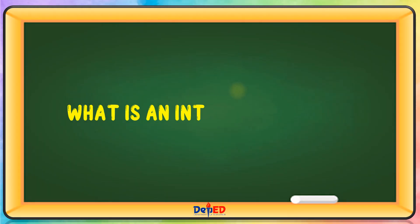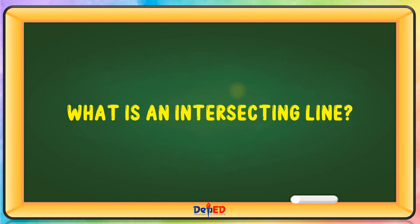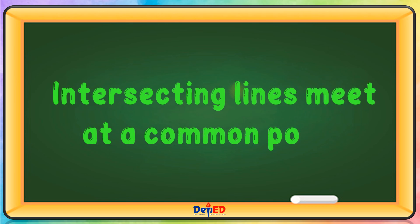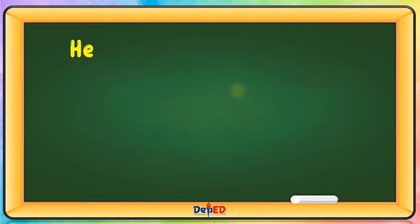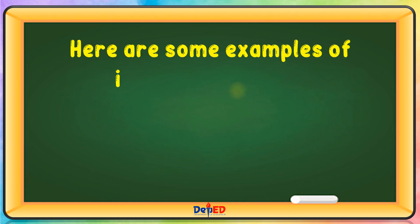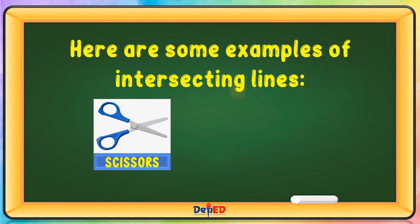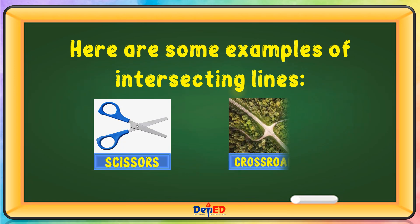What is an intersecting line? Intersecting lines meet at a common point. Here are some examples of intersecting lines: scissors, crossroads.